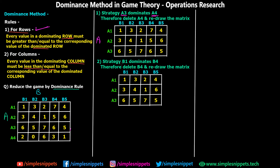In step number two, strategy B1 dominates B4 — therefore delete B4 and redraw the matrix. From the reduced matrix we observe that column B1 for player B dominates column B4. For columns, the rule is different: the dominating column values must be less than or equal to the dominated column values. B1 dominates B4 because 1 < 7, 3 < 5, and 6 equals 6 — which is also allowed. So we erase B4 and redraw the matrix without it.